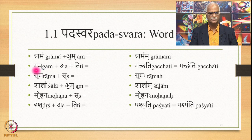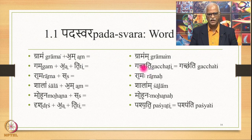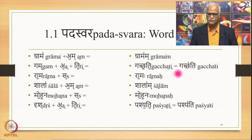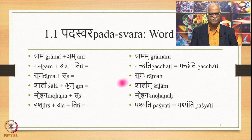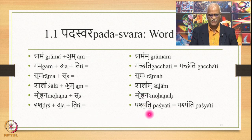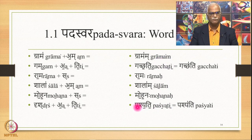Grama is substituted by Gatcha, so this A Udathaswara gets extended, and finally we get the initial vowel Udathaswara. So Gatchati has these accents. Then this Anudathaswara becomes a Swarita in order to indicate that this is an Udathaswara — remember, this is a Pada level accent. Similarly, in Rama to which Sa is added there is no scope, so Ramaha is finally accented. Shalam is initially accented. Mohanaha is finally accented. And Pashyati is initially accented. These are the Padaswaras without the context of the Vakya.